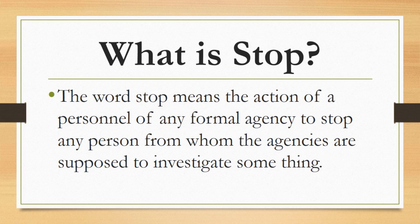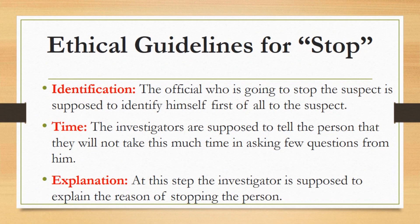The question arises: who would be supposed to be stopped by the agencies? Is it so that the agencies would stop everybody randomly? The answer is straightforward no. Agencies will not stop everybody; instead, they will stop only the suspects — those who would be suspicious in any crime case. But still, there are proper guidelines for the authorities to stop the suspects, and there are steps which are supposed to be followed by the authorities or investigators while stopping a suspect.